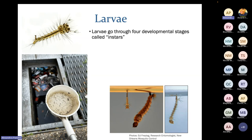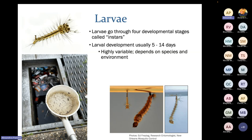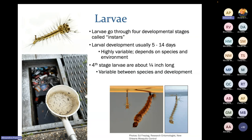Larvae emerge from the eggs and go through four developmental stages called instars. This whole larval stage of molting through four instars takes around one to two weeks, but the speed is very variable depending on the species, amount of food available, presence of predators, and temperature of the water. In their fourth instar, they're about a quarter of an inch long. You can see significant size differences between species — for example, a Culex larva compared to a Toxorhynchites larva.